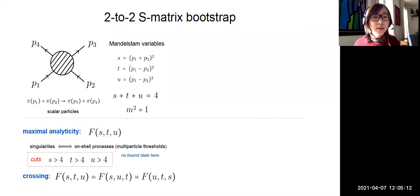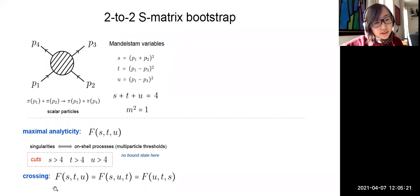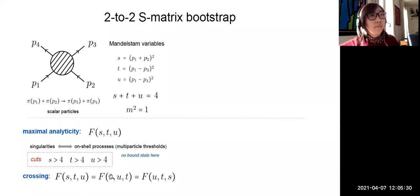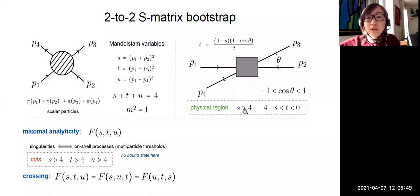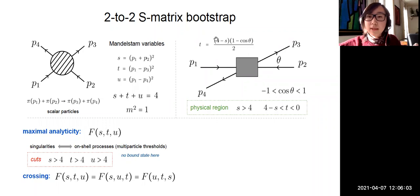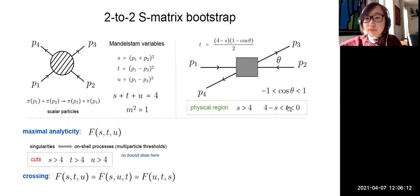For the two-particle threshold, these correspond to cuts in the amplitude for s ≥ 4, t ≥ 4, and u ≥ 4. In addition, we have crossing symmetry — for the single flavor pion, the amplitude is the same when we exchange s, t, u. In a real scattering experiment, two particles come in with a certain energy-momentum, and when the total energy s is larger than the two-particle threshold, two particles come out at a scattering angle θ. The scattering angle θ is related to the Mandelstam t variable, taking values between 0 and π, which corresponds to t between 4 − s and 0.